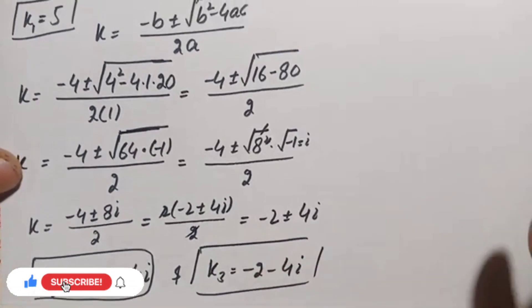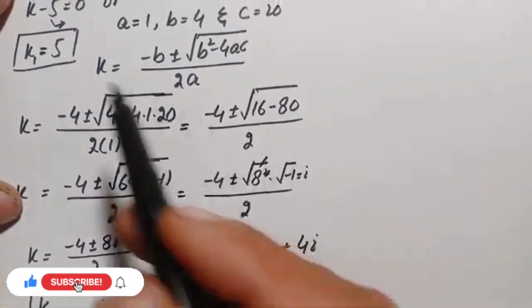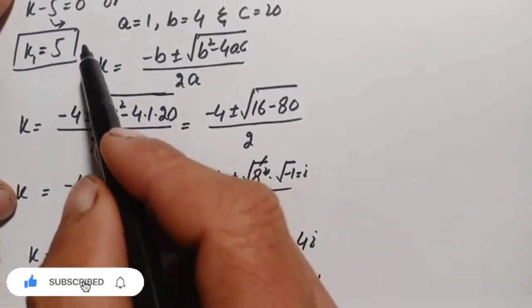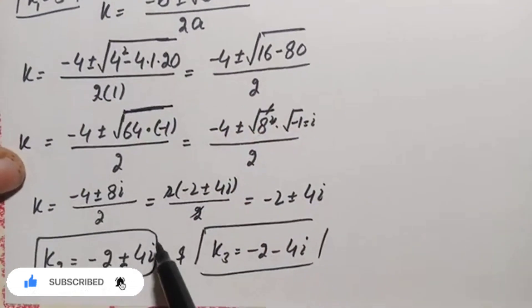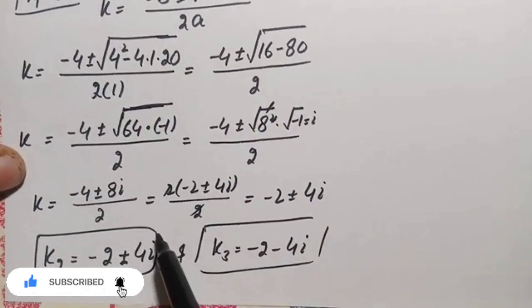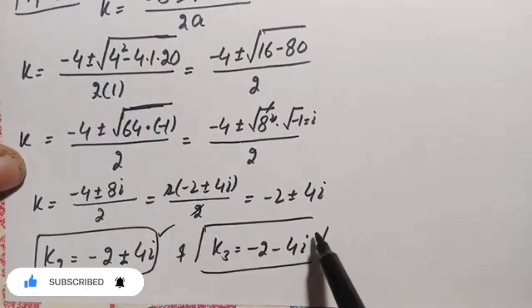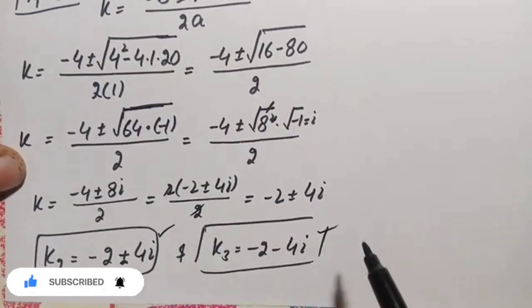Finally, we have three solutions: k1 equals 5, which is a real solution, and k2 and k3, which are complex solutions: negative 2 plus 4i and negative 2 minus 4i.